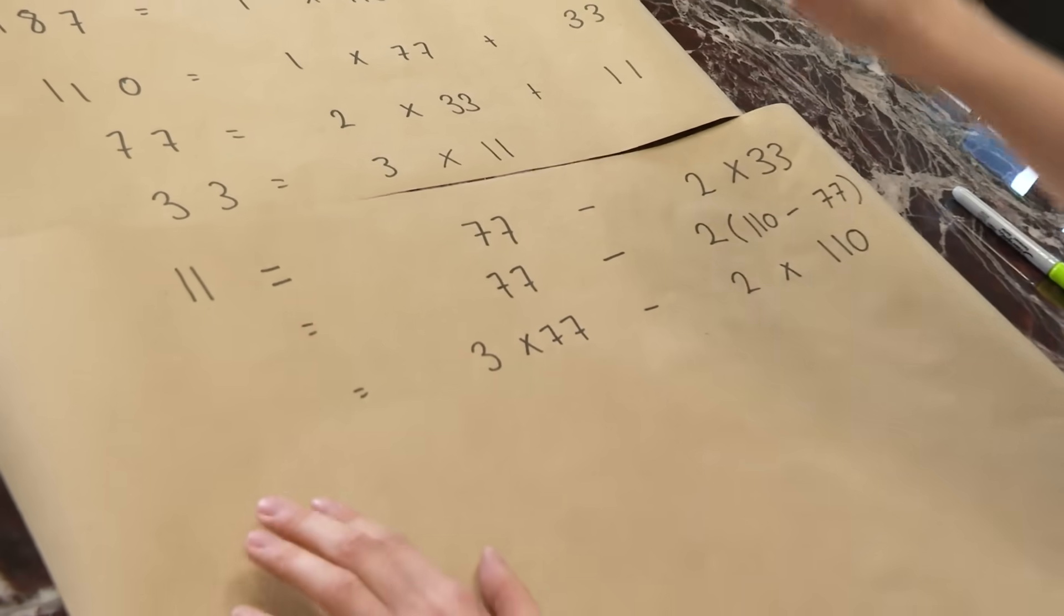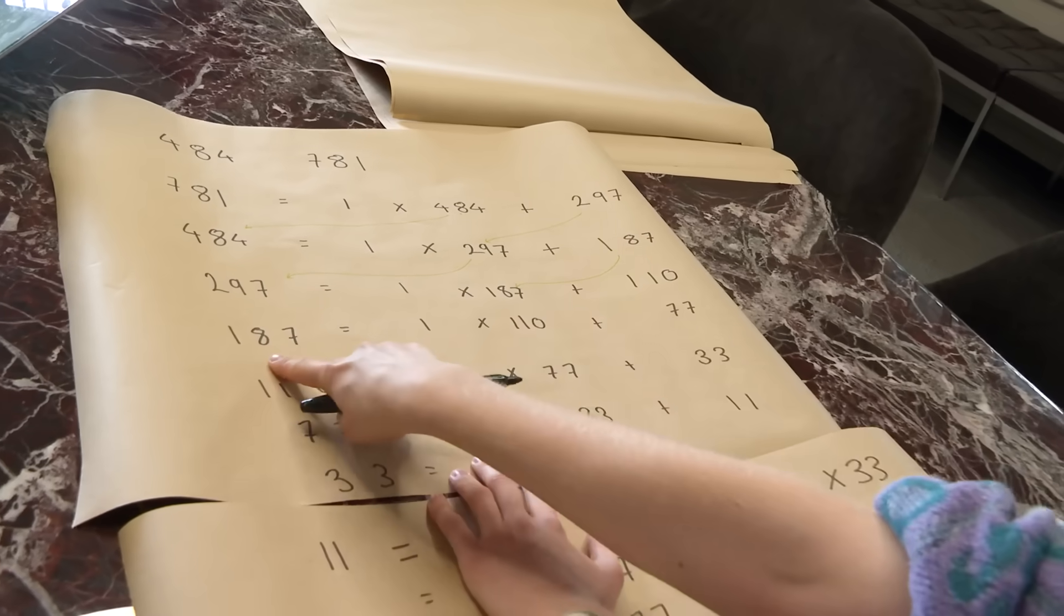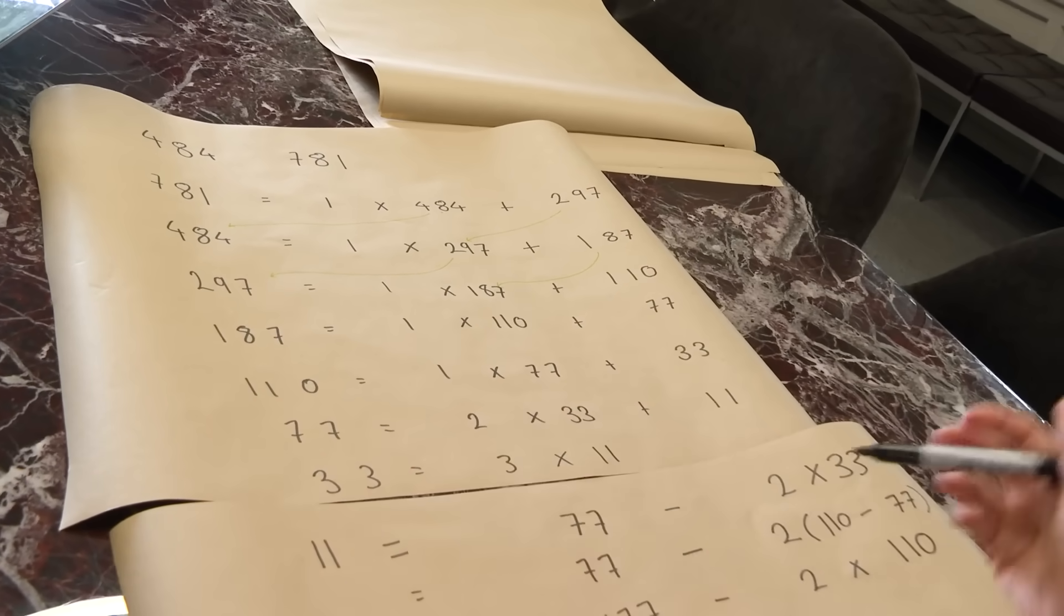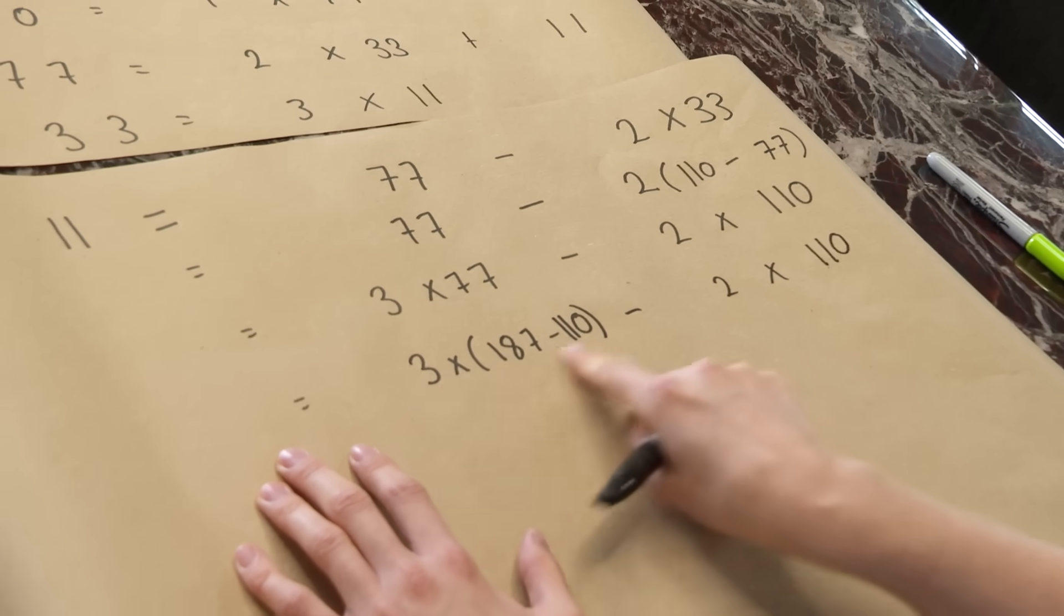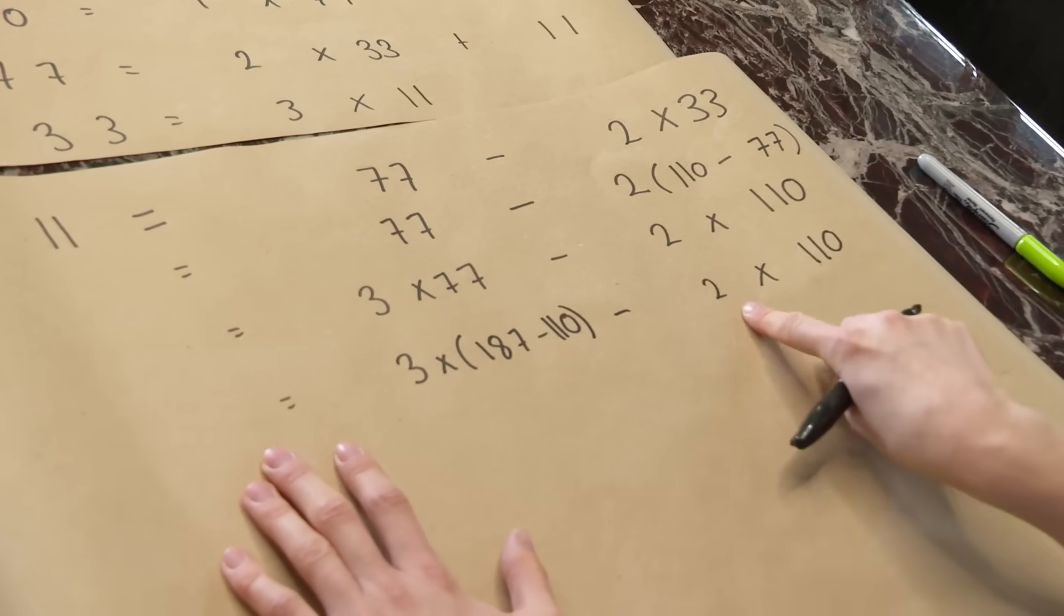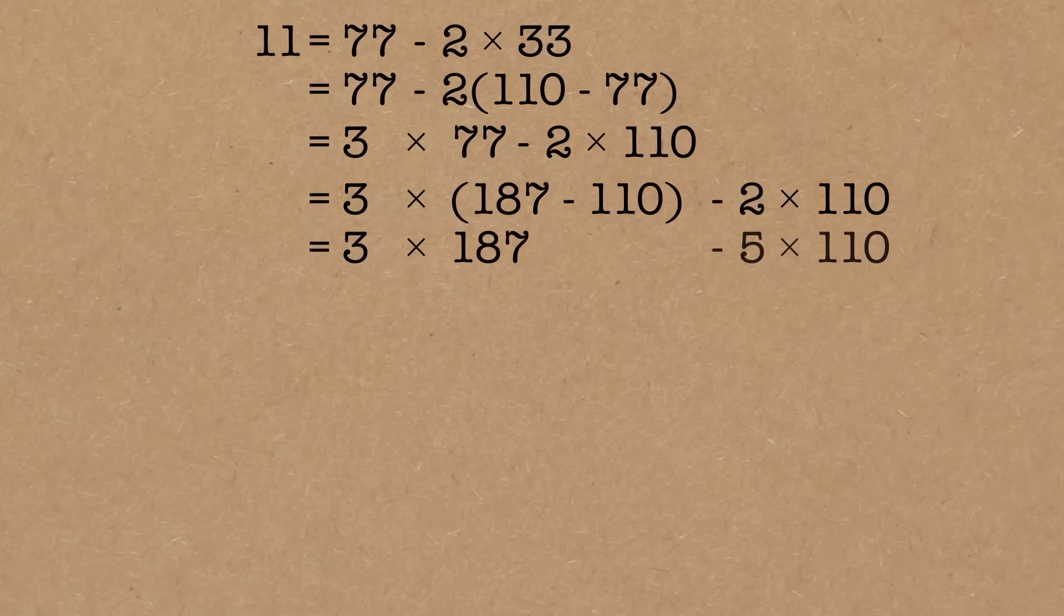Now we're going to replace the 77 using the next equation up. So here, 77 is 187 minus 110. So 3 times 187 minus 110 minus 2 times 110. So 3 times 110 here, add 2 times 110. So this is minus 5 times 110. And we're going to keep going. And this will probably now be sped up because it's going to be a whole bunch of repeated calculations.